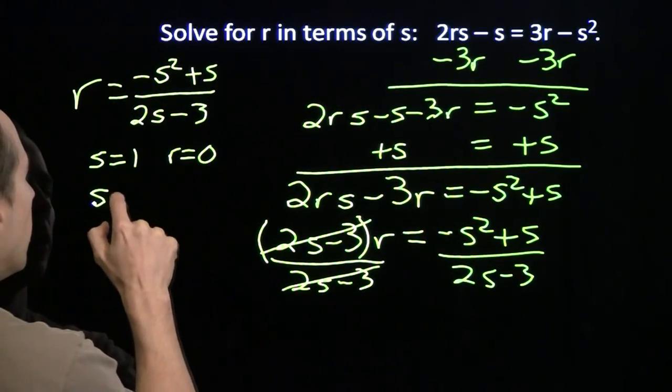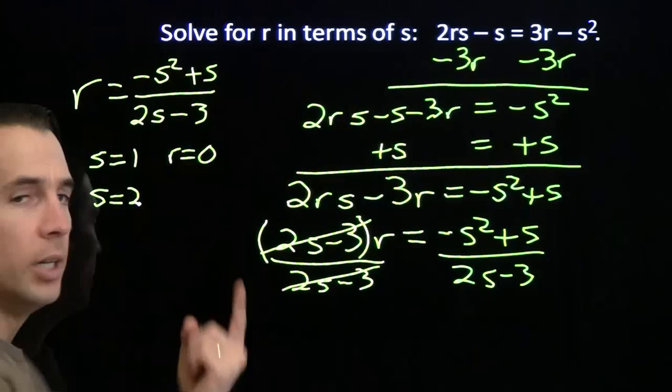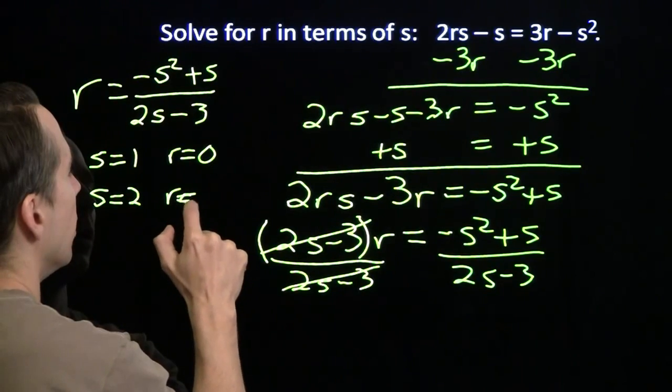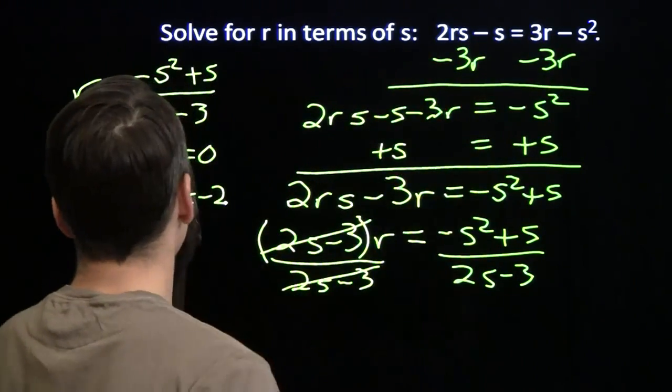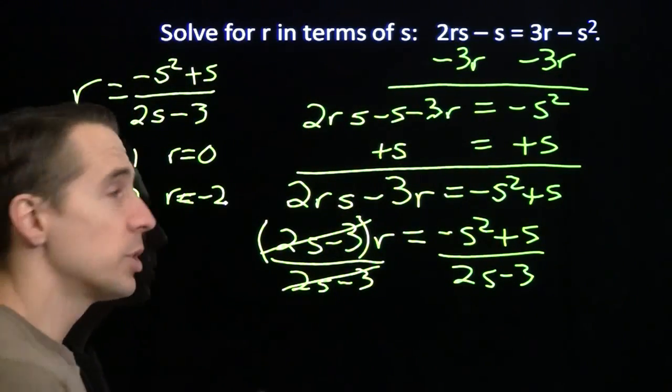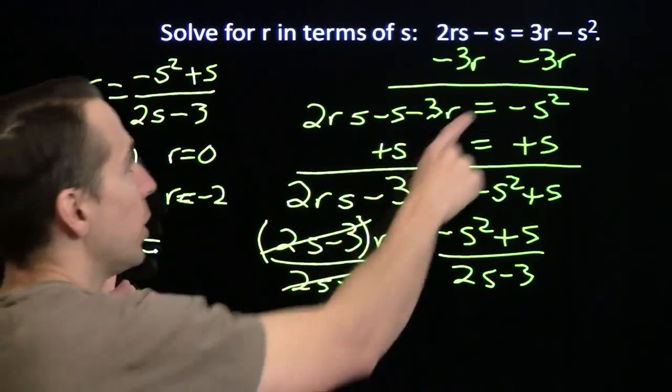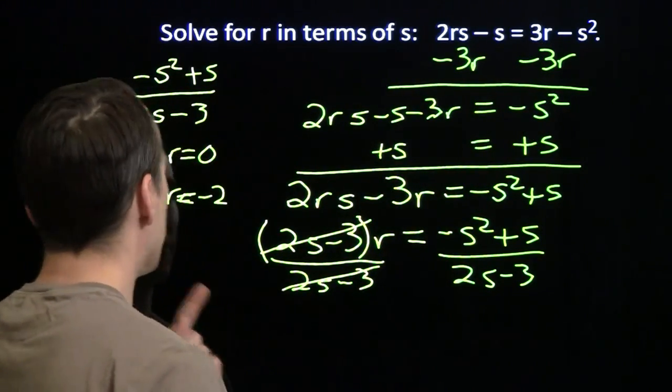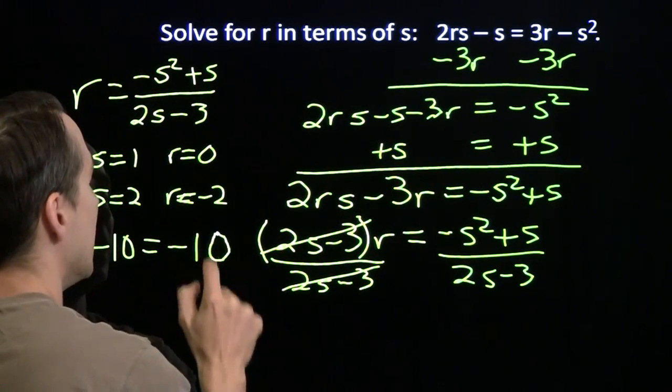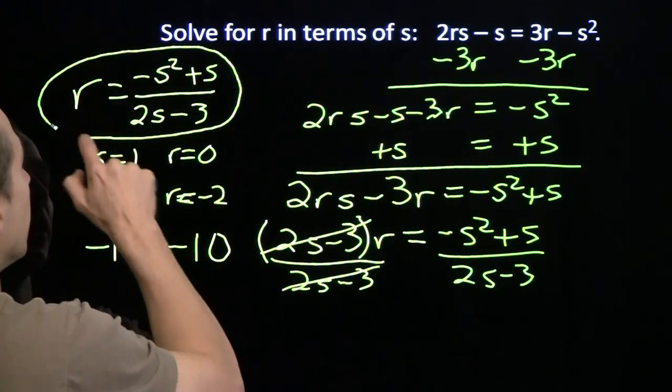Let's try one more. If I put s equals 2 in here, the denominator just becomes 1. 2 times 2 is 4, minus 3 is 1. And up in the numerator, I get minus 4 plus 2, I get r is minus 2. And I'm going to test that, I'm going to put these up in here. 2 times minus 2 is minus 4. s now is 2. Minus 4 times 2 is minus 8. Minus 8 minus the 2 gives us negative 10 on our left. And what do we get on the right here? 3 times negative 2 is negative 6. Minus 2 squared, that means minus 4. Negative 6 minus 4, that also is negative 10. So now we can be pretty confident, we've tested it a couple times, both of them worked. We can be pretty confident that we are done.